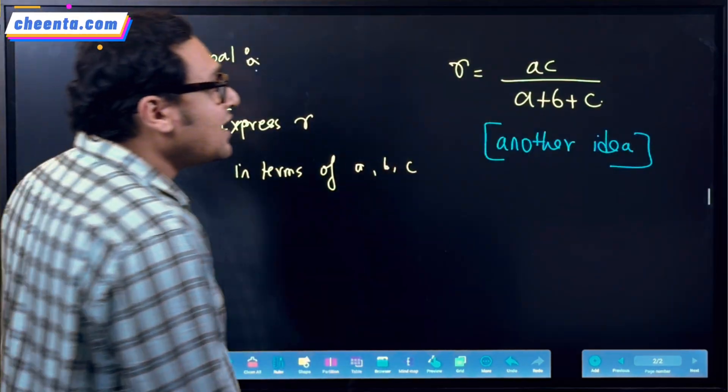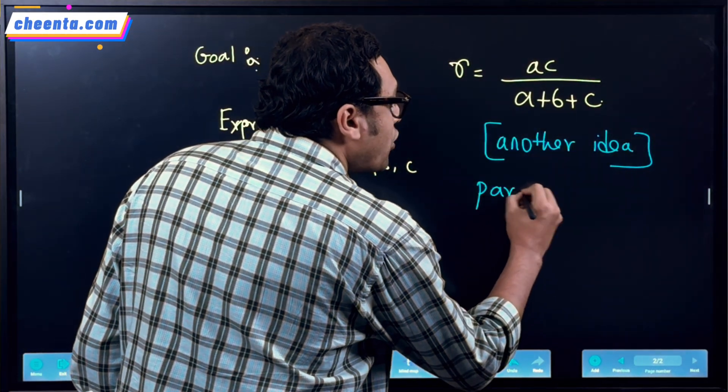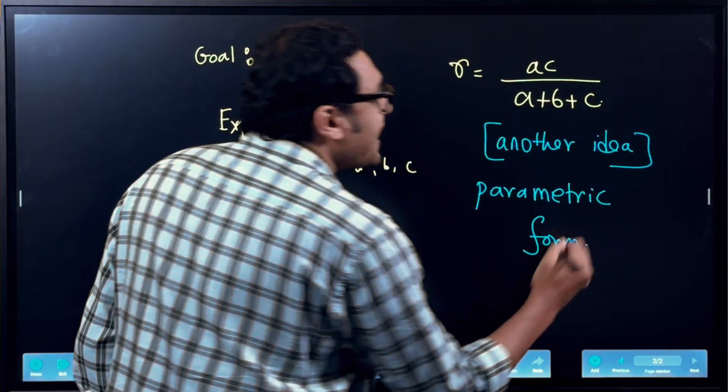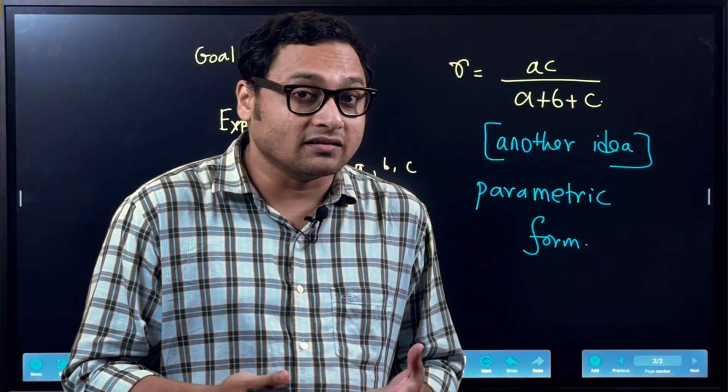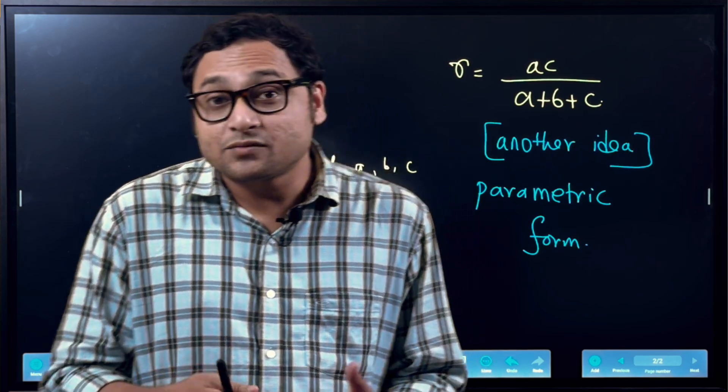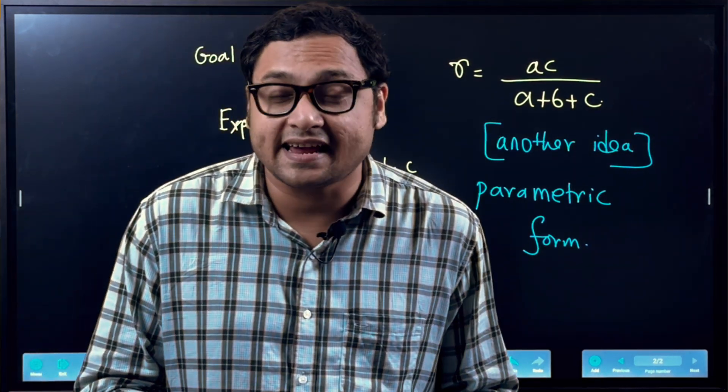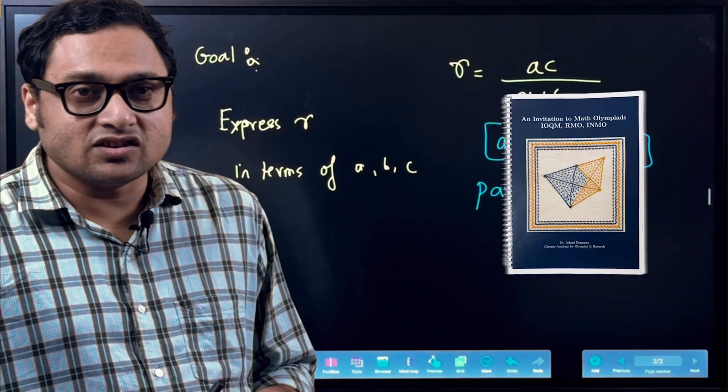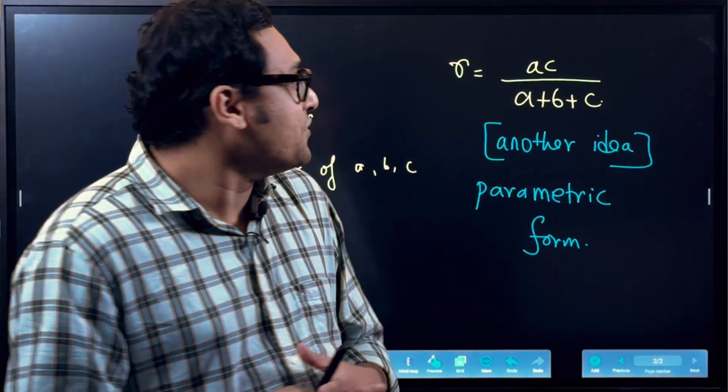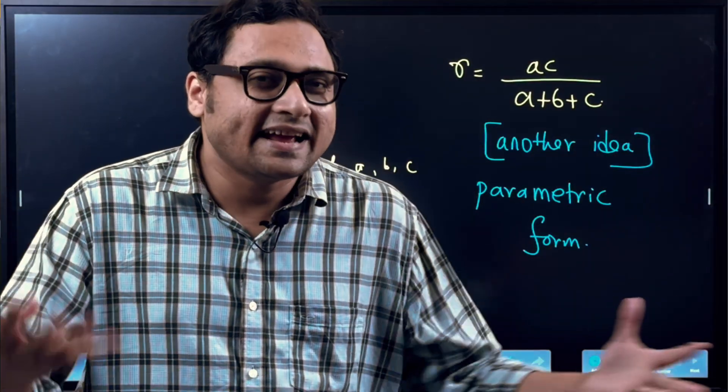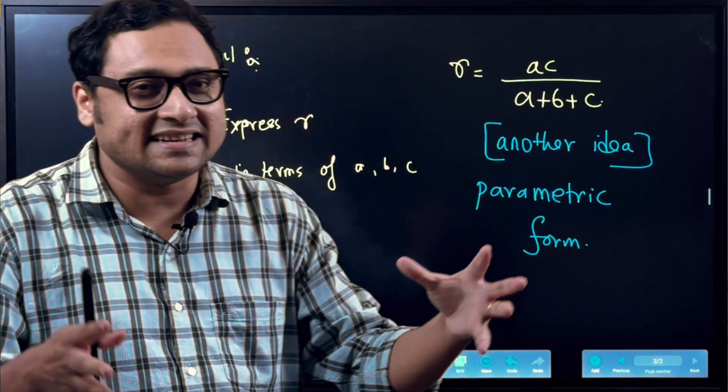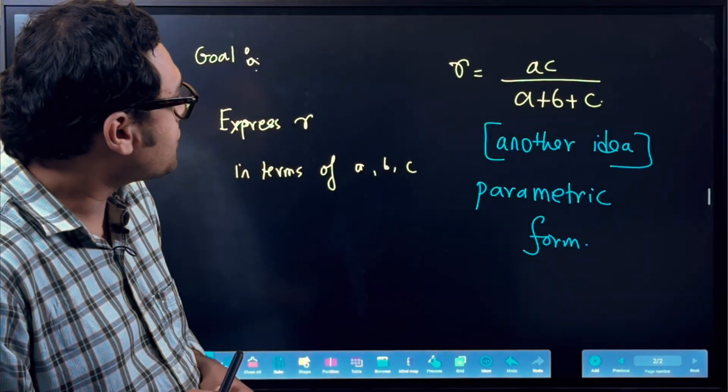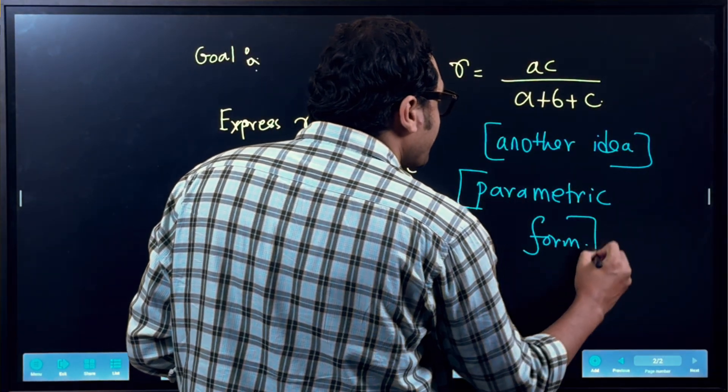We want to use the parametric form of the sides of a right triangle. Now this we have discussed in great detail in the book, The Invitation to Mathematical Olympiads. You can see more into the discussion for a lot of detail related to this single idea. There is a chapter called the Pythagorean Excursion. You can see it there.